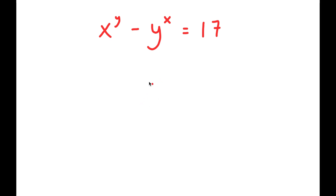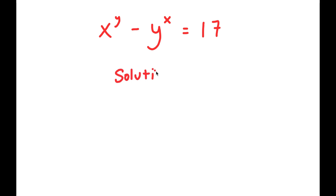All right, so in this problem, I have x to the power of y minus y to the power of x is equal to 17. To solve this problem, I'm going to first rewrite the equation right here.